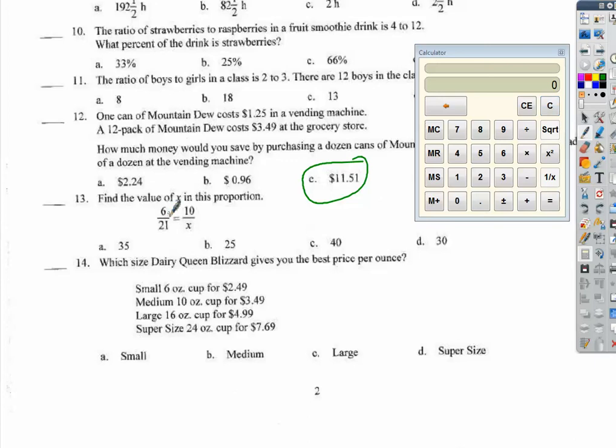Find the value of x in this proportion. So, this one, I'd be tempted to reduce this, because I know 3 goes into both of them. 3 goes into 6 twice. 3 goes into 21 seven times. The scale factor here is times 5, so multiply that by 5, and you get 35. 7 times 5 is 35.